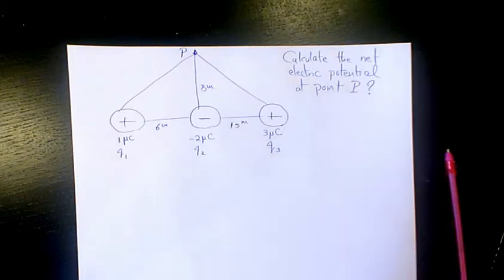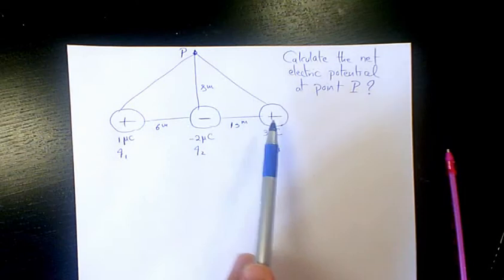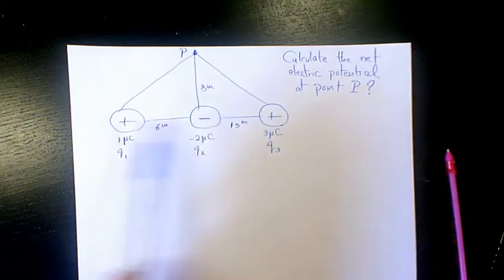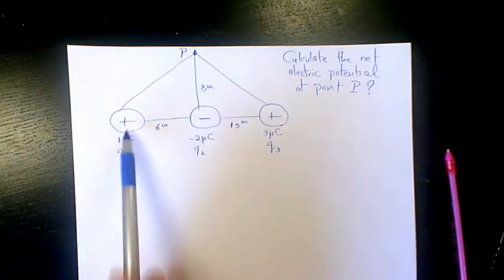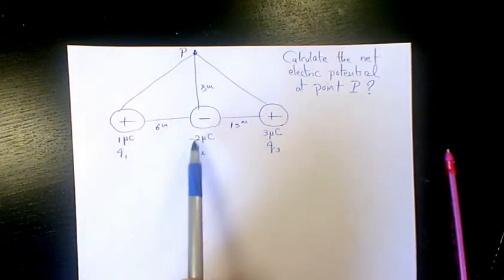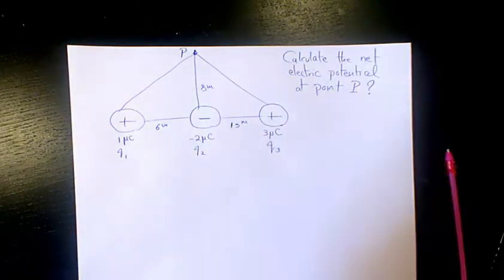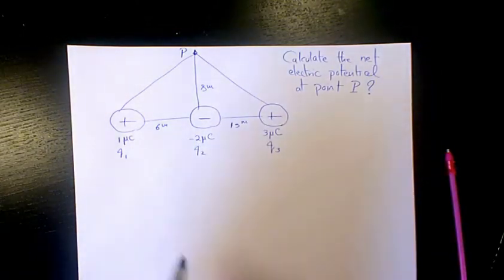In this example I want to calculate the net electric potential at point P. We have three charges: Q1 is one microcoulomb, Q2 is negative two microcoulombs, and Q3 is three microcoulombs.